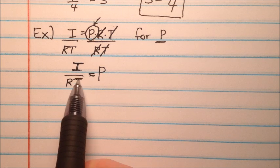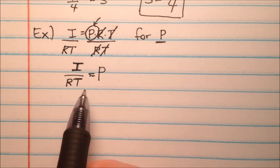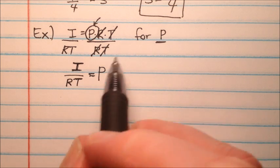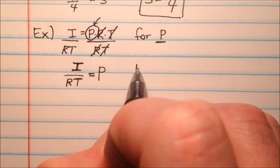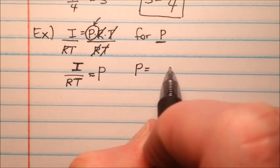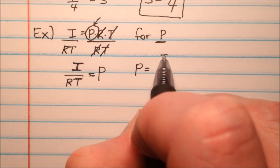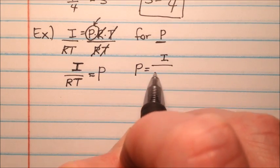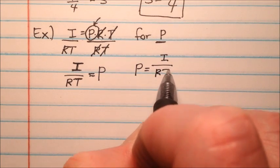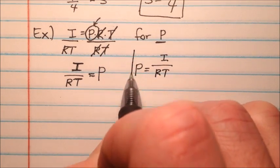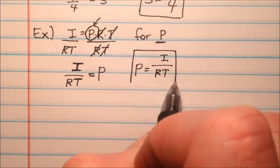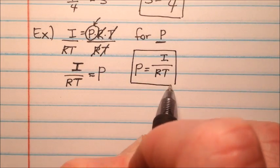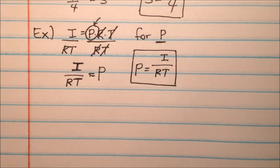Using the symmetric property of equality, I can flip those two around and say p equals I divided by rt. That will be my solution for the second example.